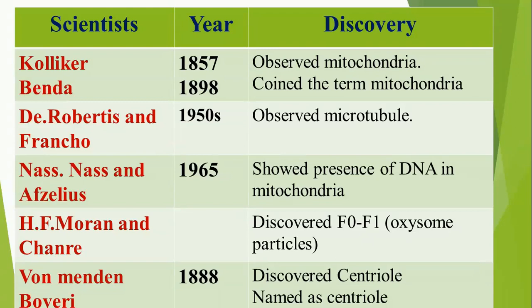Nass, Nass, and Afzelius in 1965 showed the presence of DNA in mitochondria. It was Racker and Kandrey who discovered the oxysome particles, also called F1 particles. Von Beneden in 1888 discovered the centriole, but the name 'centriole' was given by Boveri.